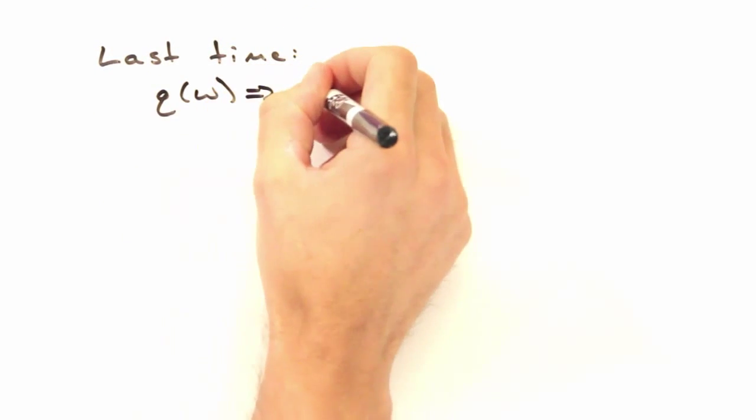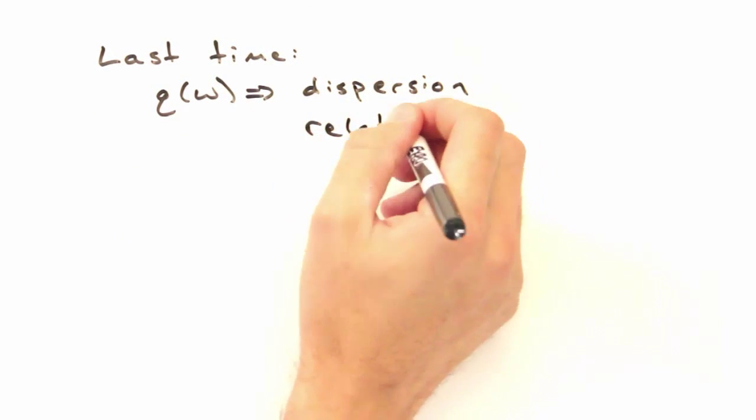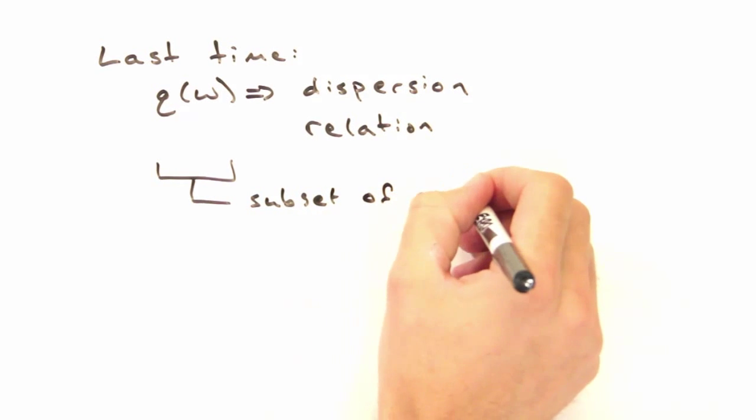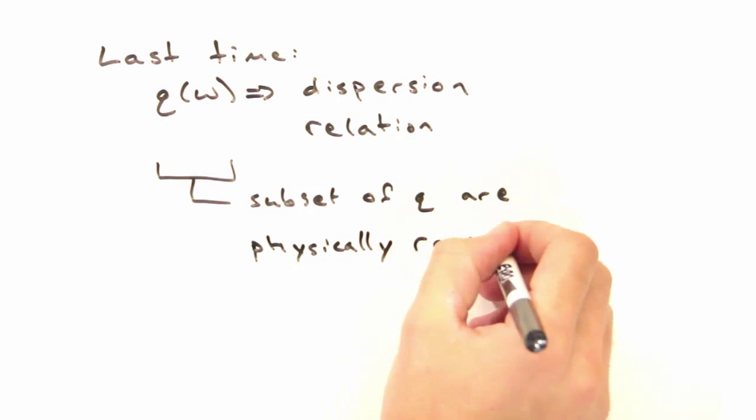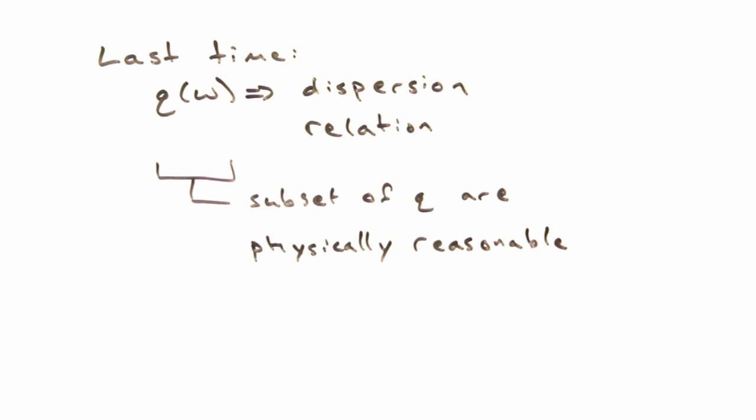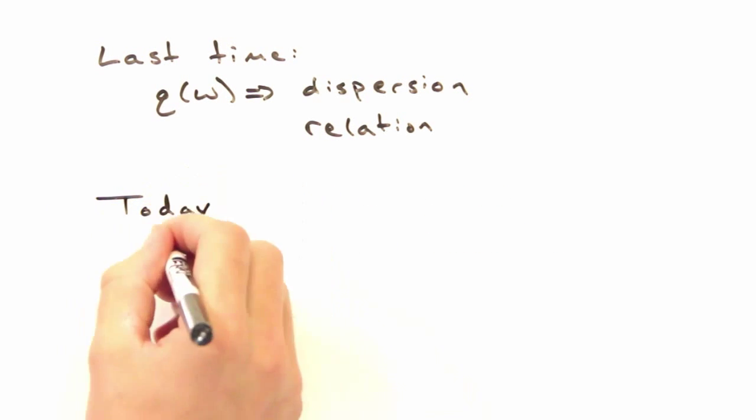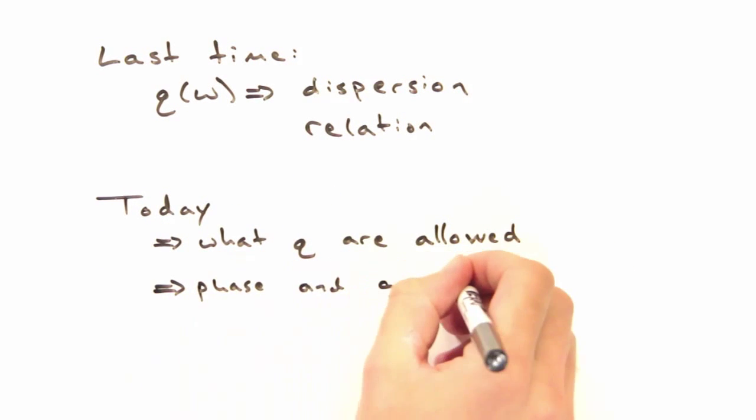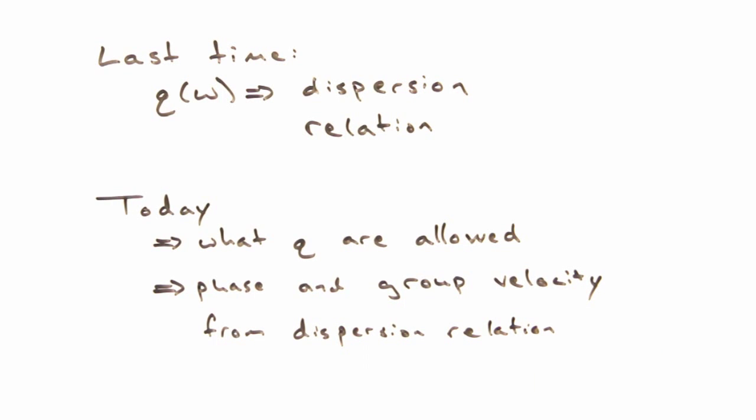Last time we developed a relation between our wave vector q and the frequency of oscillations in a solid called the dispersion relation. Although we plotted omega over all values of q, only certain values of q will result in something physically reasonable. Today we're going to look at what those values are and how to get phase and group velocity information from our dispersion relation.